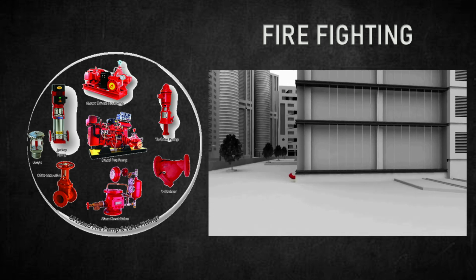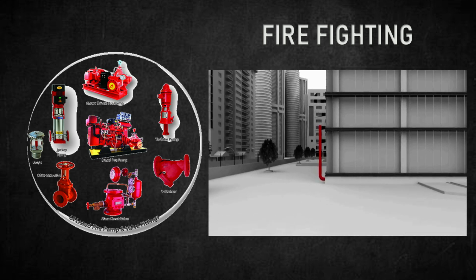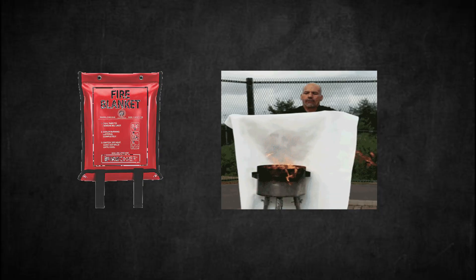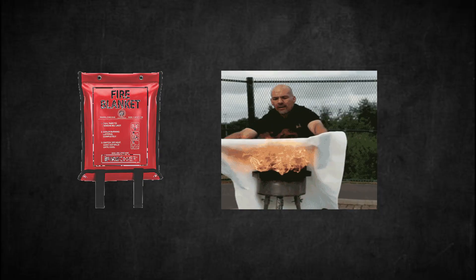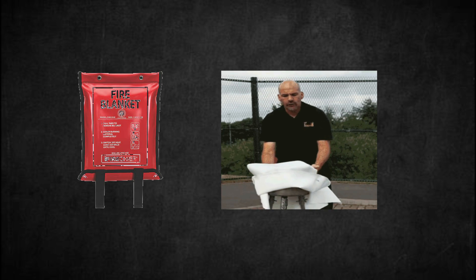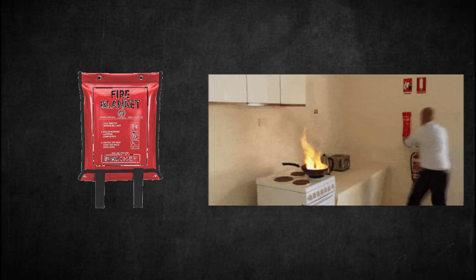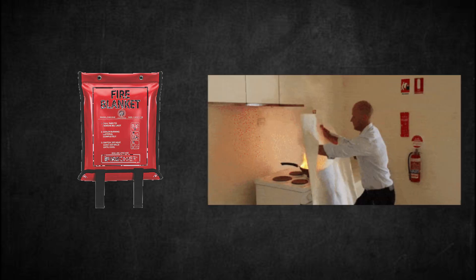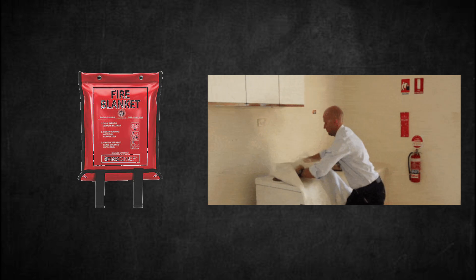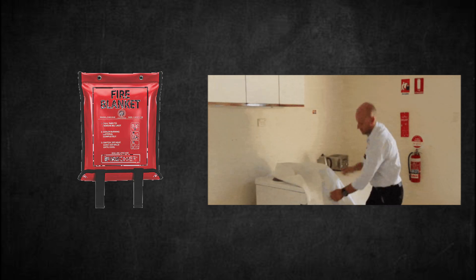The firefighting system is designed to save the building or property. The simplest type of firefighting is a fire blanket or fire bucket, as it is used to stop the spread of fire and thus saves the property.